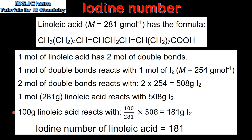The definition of iodine number is the number of grams of iodine that reacts with 100 grams of fat. So 100 grams of linoleic acid reacts with 100 divided by 281 times 508, which gives us 181 grams of iodine. So finally the iodine number of linoleic acid is 181.